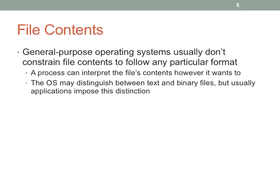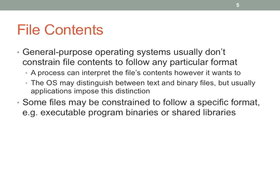In general, we do not constrain what can be stored in a file — we don't say this is the required format. The process can interpret the contents however it wants. It used to be that operating systems would distinguish between text files and binary files, but now we have text files that look like binary files because we support all kinds of character sets, and binary files used in many different ways. The OS is imposing fewer and fewer such distinctions going forward.